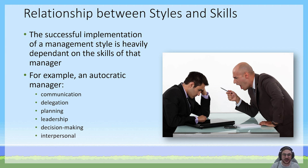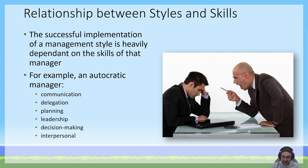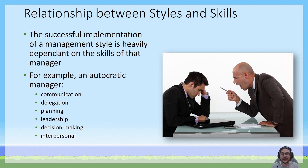An autocratic manager uses centralised decision making and communicates top-down to their employees, giving them instructions. The skills we've looked at in the study design — communication, delegation, planning, leadership, decision making, and interpersonal — can be applied to any of the management styles we've looked at. For example, with an autocratic manager, they need to be able to communicate effectively. If they're making decisions themselves and then dictating instructions to their subordinates, they need to be very clear in their communication.